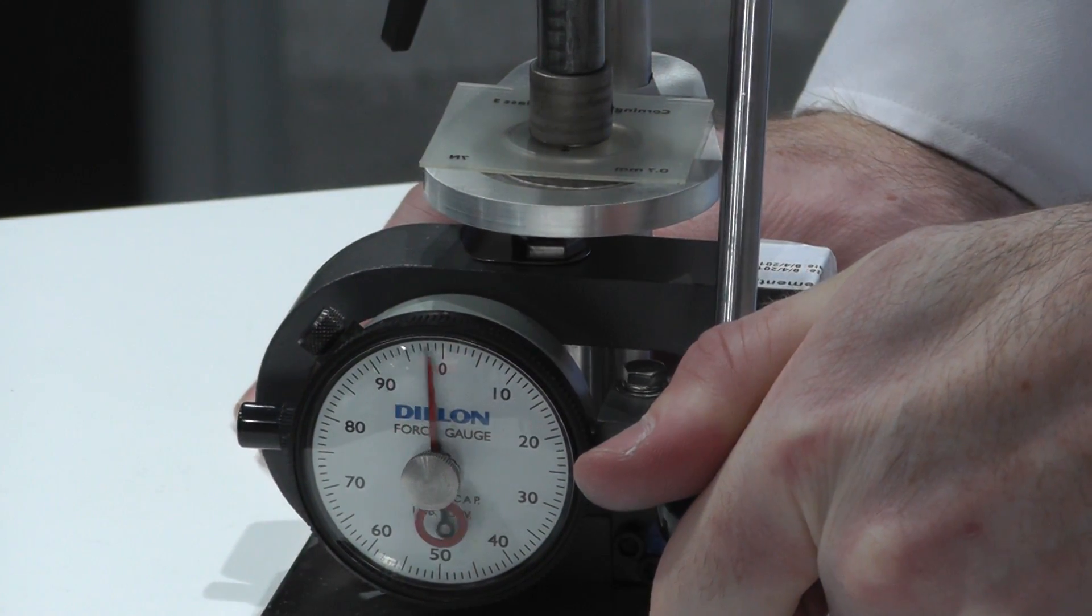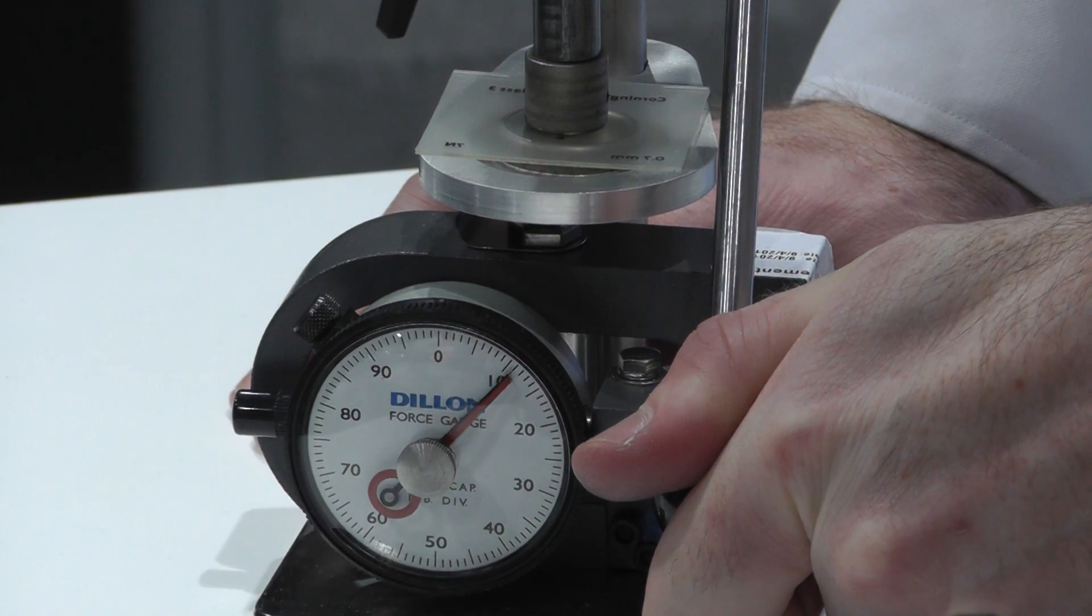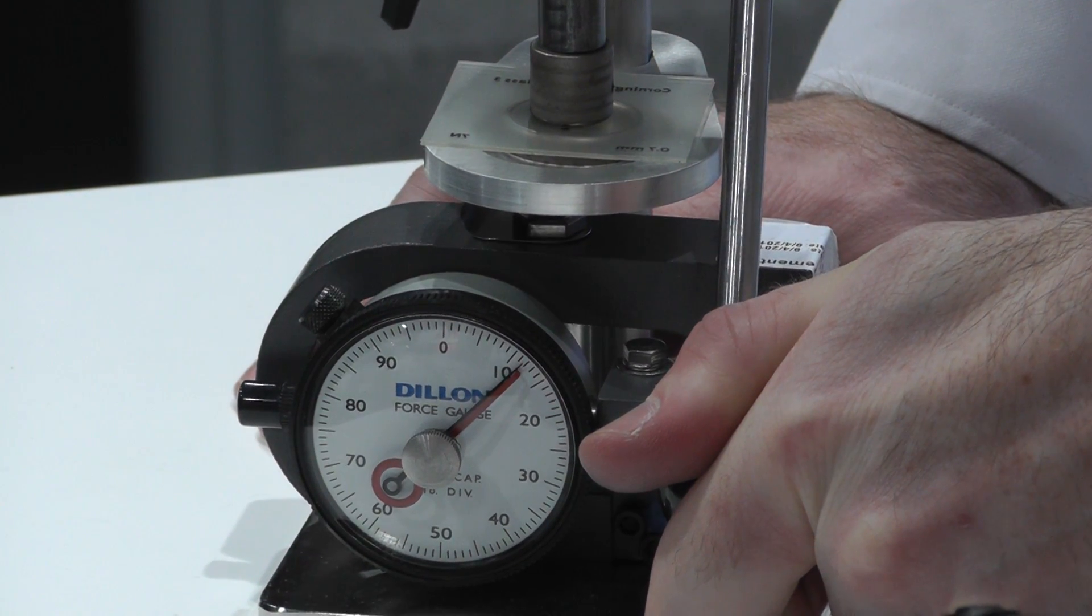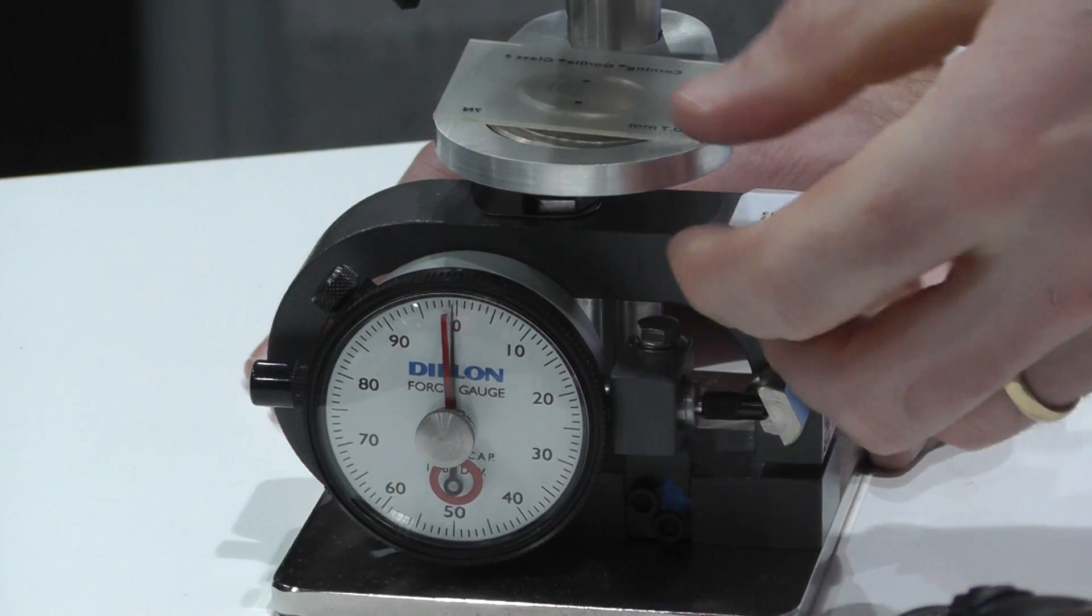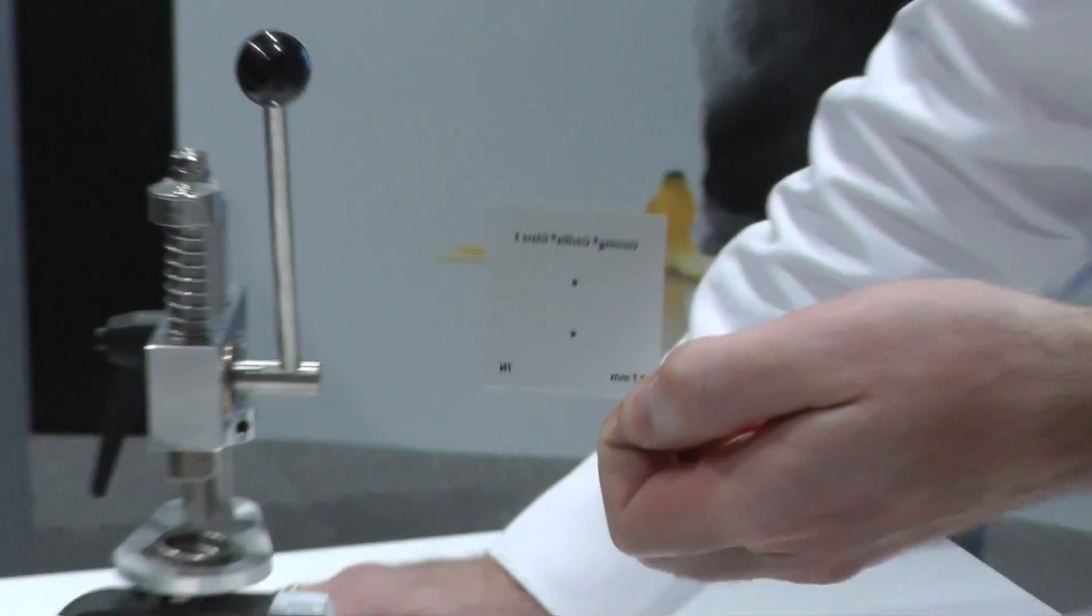We're at 70, 80, 90, 100... Just over 110 pounds is about what I can get on it. That sample is still intact, retains its strength, even though it's been damaged severely by scratch.